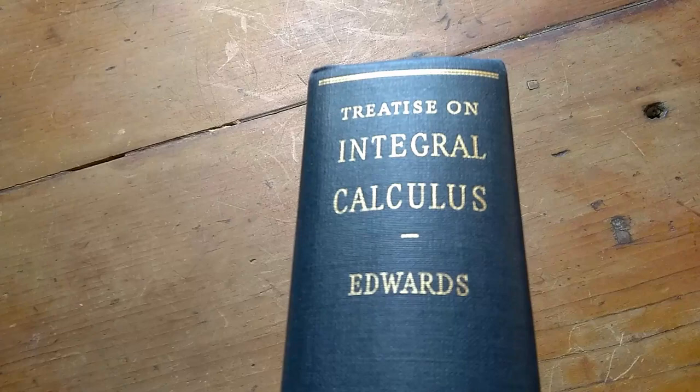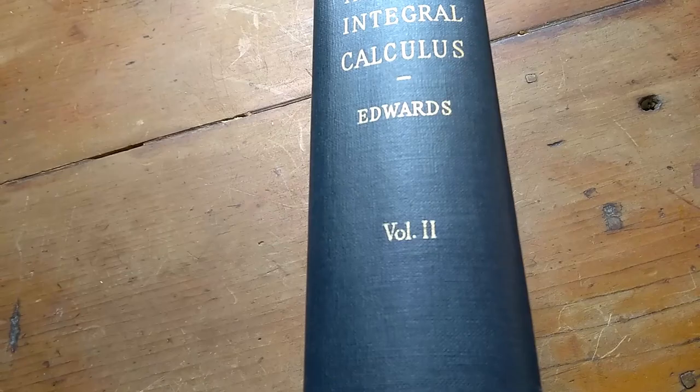So this is a calculus book from 1922. Check out the name of this book - even the name is cool. It's called Treatise on Integral Calculus, and it's written by Edwards, and this is volume two.